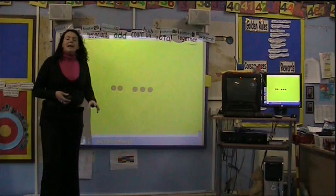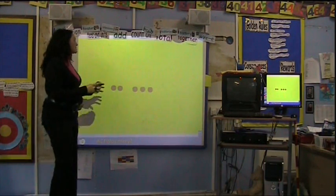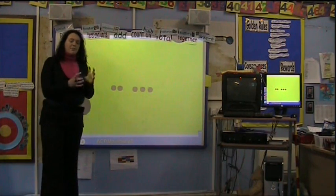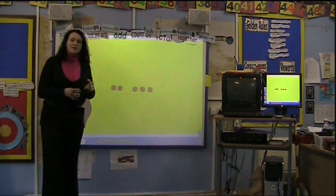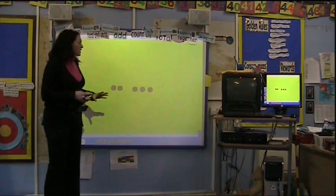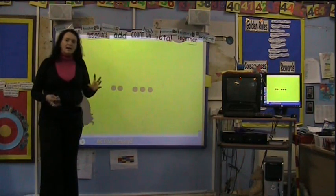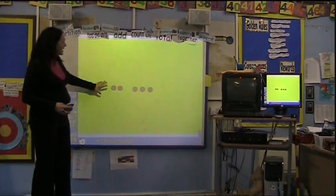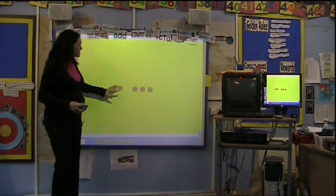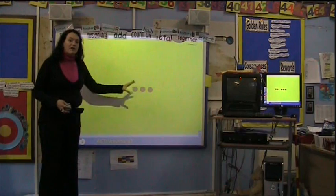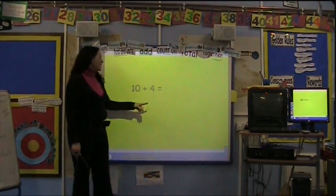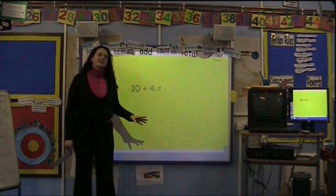We start by letting the children physically move counters around and find out for themselves how to add. So they'll be putting counters, numbers together, using cubes or buttons or anything they can physically touch themselves. So if they had buttons, they could add 2 and 3 together to find that there's 5. Once the children are secure in finding a total using any kind of counting material...